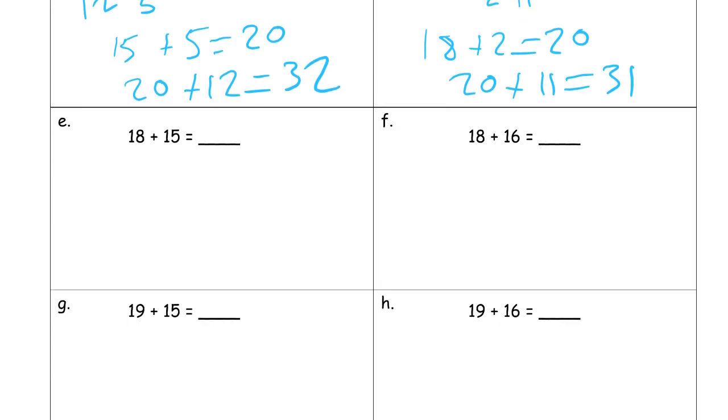And here's 18 plus 15. And let me try this one. For this one, I'm going to say 18 is almost 20. So it needs 2 more. And that would mean 2 less than 15 is 13. And now I can do the 18 plus the 2. That's 20. And 20 plus 13. 33.